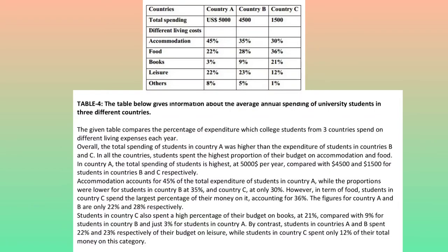The table below gives information about the average annual spending of university students in three different countries. The given table compares the percentage of expenditure which college students from three countries spend on different living expenses each year. Overall, the total spending of students in Country A was higher than the expenditure of students in Countries B and C. In all the countries, students spent the highest proportion of their budget on accommodation and food.